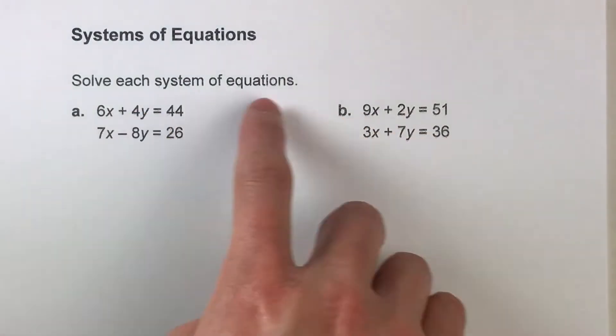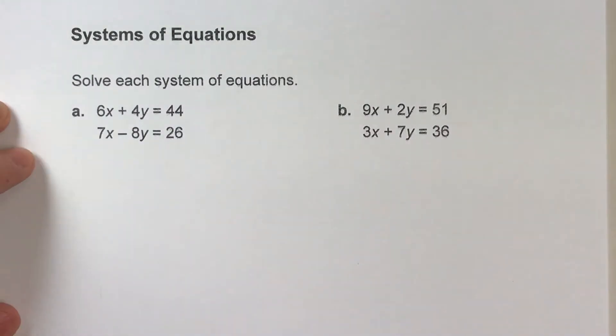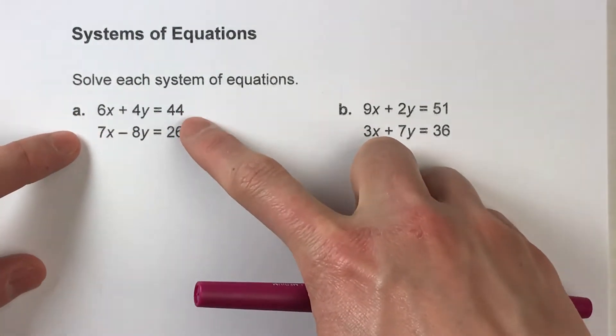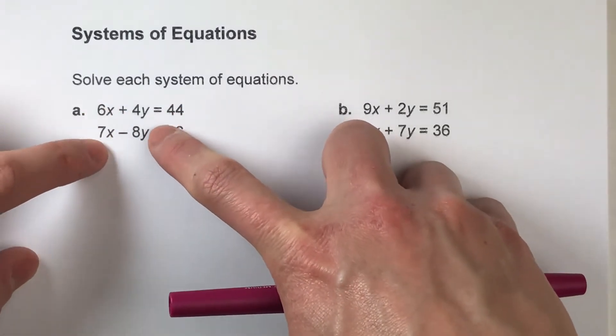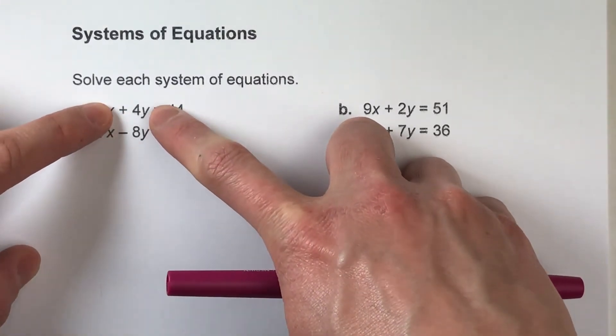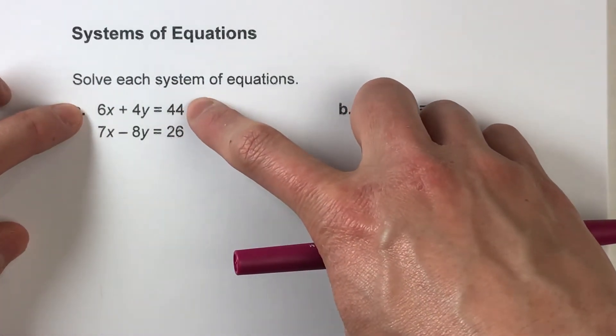Notice on today's problem the X's don't match up and the Y's also don't match up, so none of the variables match up. But what we're gonna do is add one more step and make one of the variables match up. If I look at these two equations, even though they are different—this one has positive 4Y, this has negative 8Y—I can multiply this first equation so that the Y's do match up.